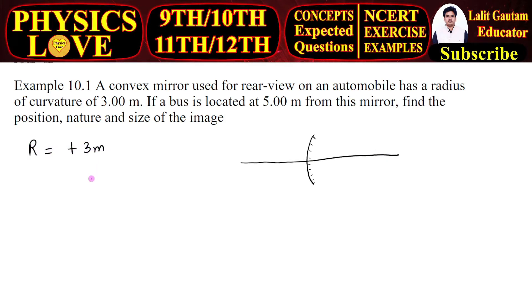If a bus is located at 5 meter from this mirror, so this is the bus and it is located 5 meter from the mirror. So we have object distance and we take it negative as per sign convention, so u is minus 5 meter. Find the position, nature and size of the image.